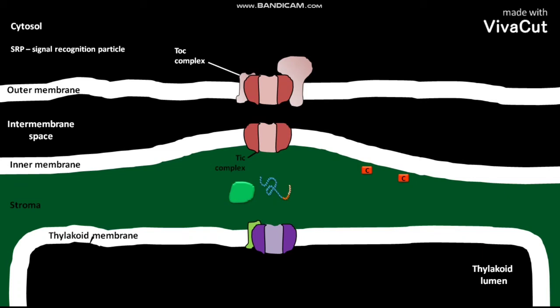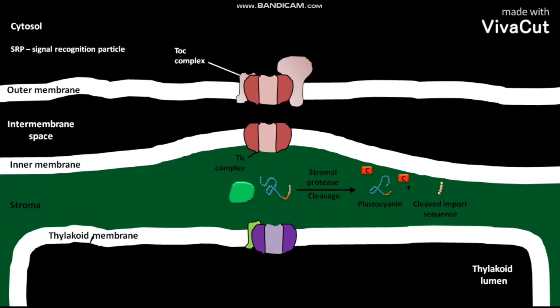Inside the stroma, the plastocyanin precursor protein undergoes cleavage to produce a plastocyanin and a cleaved stromal import sequence. This cleavage process is catalyzed by stromal protease. Due to this cleavage, the thylakoid targeting sequence in the plastocyanin is exposed.